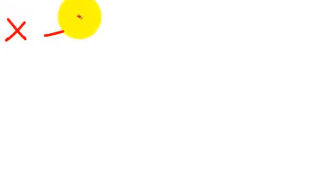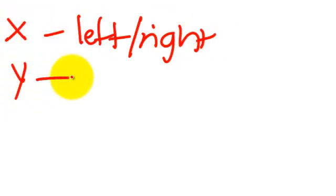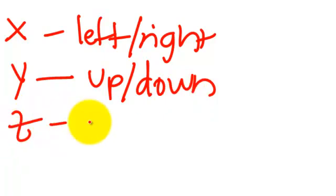On to Step 2. Step 2 says list the unknowns and knowns of the problem. We sort of did that when we labeled the diagram, but now I want to put them into variables so we can solve it mathematically. Using the axis notation, I'm going to label things x, y, and z, where x is from left to right, y is up and down, and z is diagonal.